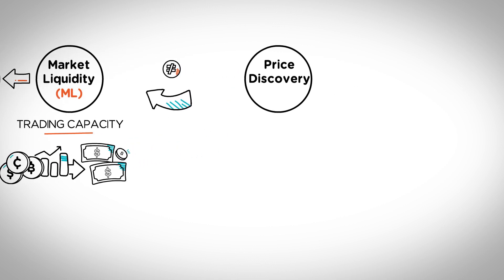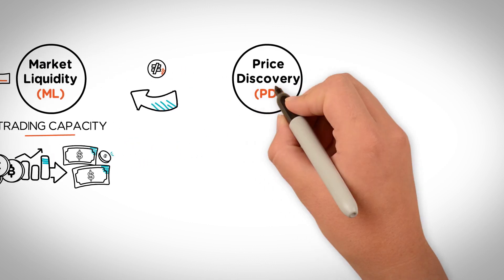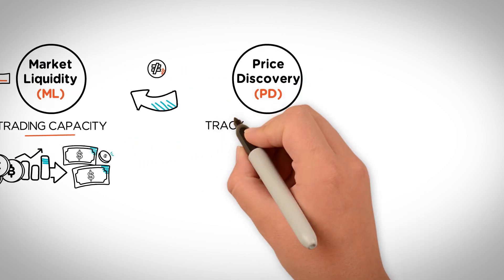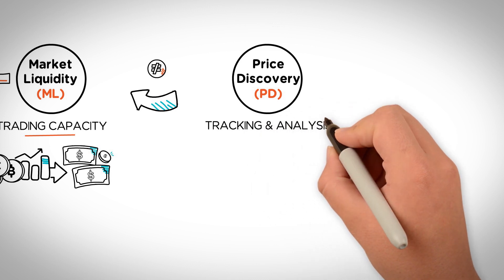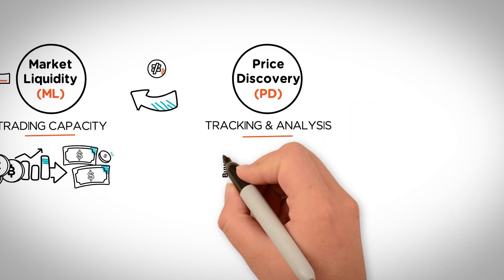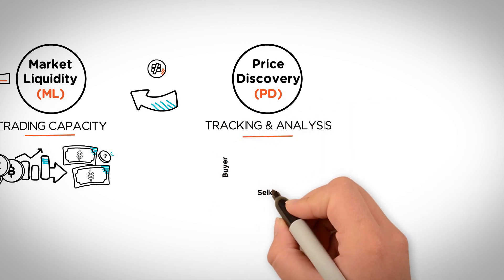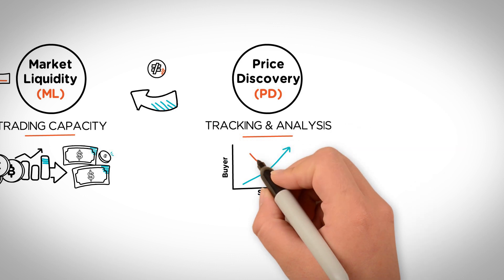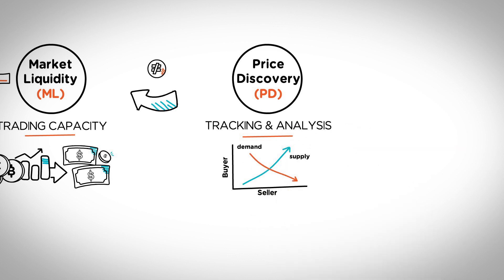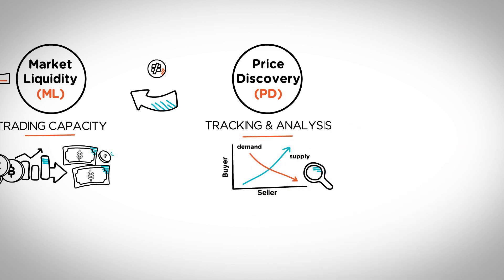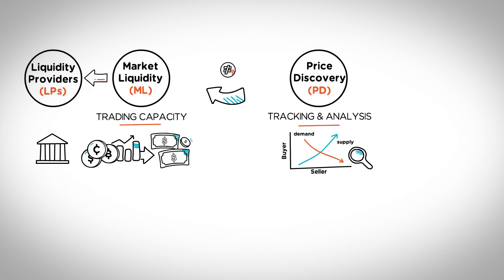Despite the fact that market liquidity and price discovery are two distinct trading terms, the latter is dependent on the former. Price discovery, or PD, on the other hand, is a mechanism that tracks and analyzes the history of buyer-seller interactions, and then uses that information to determine or set market prices based on real-time feedback.